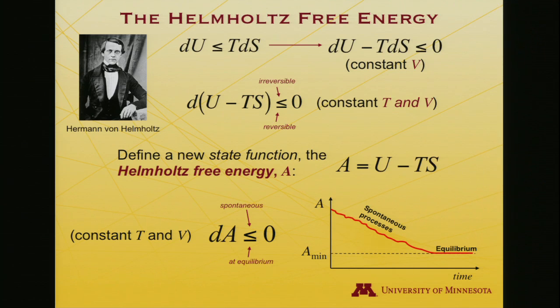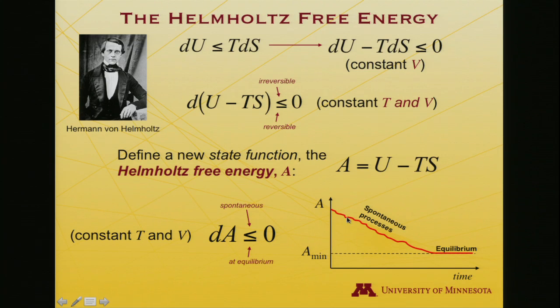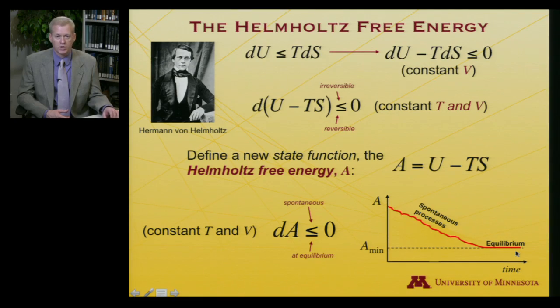If we imagine a system that starts out of equilibrium, it will have some value of the Helmholtz free energy. As spontaneous processes occur over time, they lower that free energy — dA is always less than zero — so the Helmholtz free energy decreases until finally the system achieves equilibrium, at which point the Helmholtz free energy is minimized and stays at that value until the system is perturbed again. Spontaneous processes will drive the system toward reversible equilibrium.